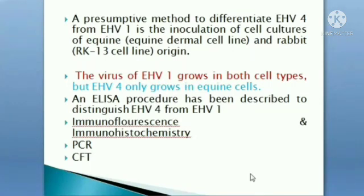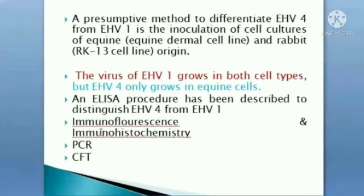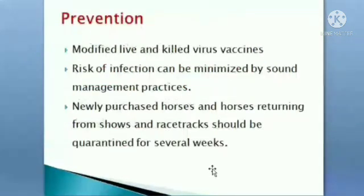ELISA tests are nowadays available to differentiate between Equine Herpes Virus 1 and 4, as inoculating virus in cell cultures is tiresome work requiring strict precautions. Other methods include immunofluorescence, immunohistochemistry, PCR, and complement fixation test.